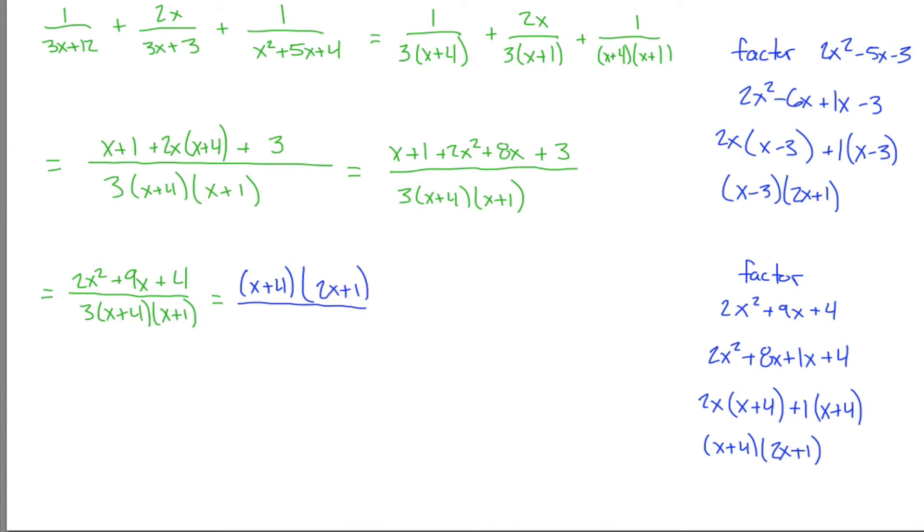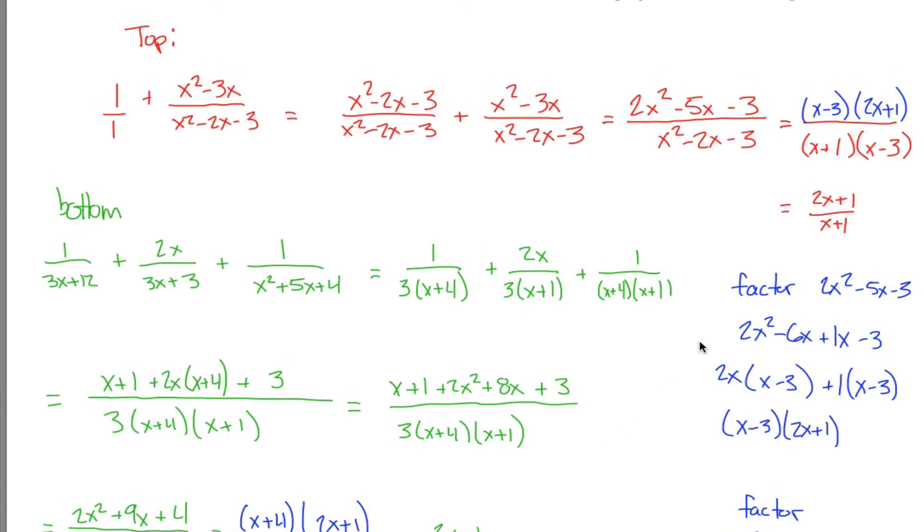What I'm saying is the top is really x plus 4 times 2x plus 1. And the bottom is 3 times x plus 4 times x plus 1. Oh, nice. There's an x plus 4 in the top and the bottom. Cancel those out. You get 2x plus 1 over 3 times x plus 1.